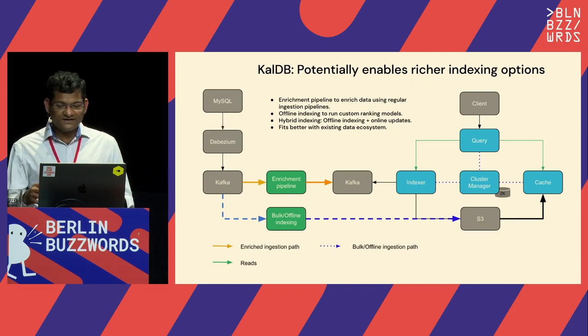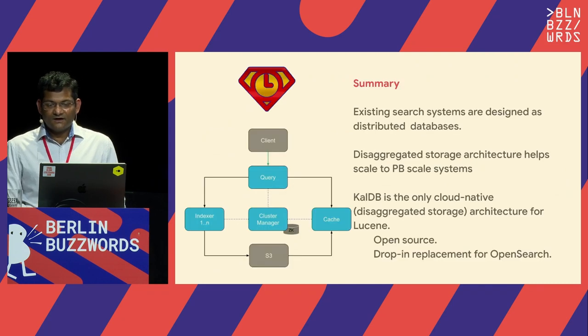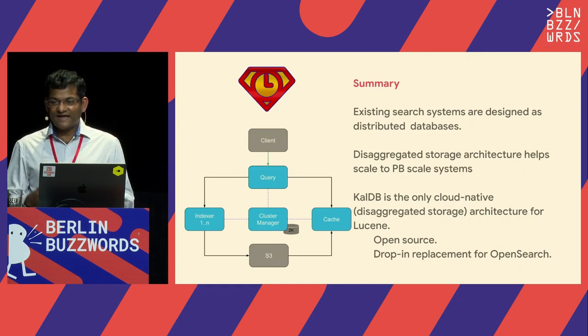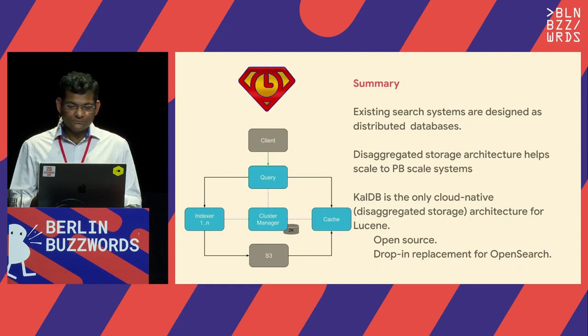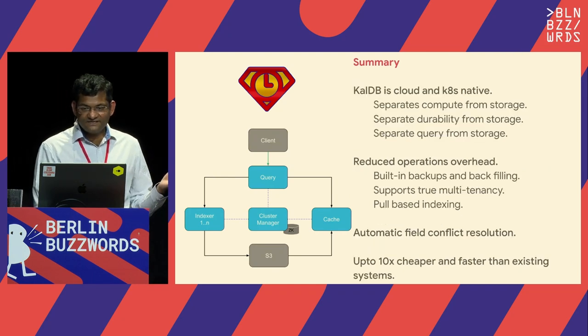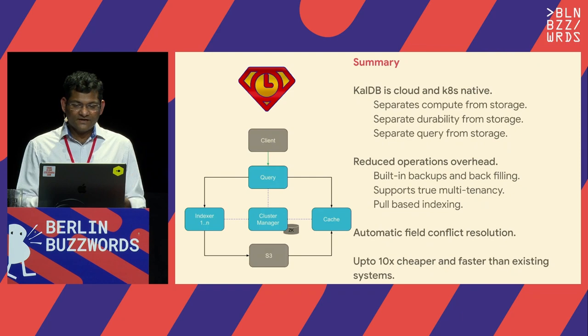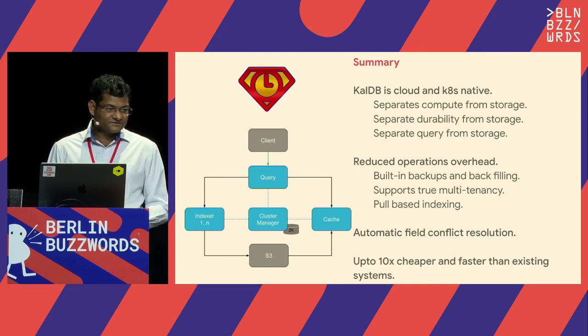In conclusion: existing search systems are designed as distributed databases. Disaggregated storage architecture helps you scale to petabyte-scale systems, and CalDB is a cloud-native architecture for Lucene. It's open source, API-compatible with OpenSearch, and separates storage from compute, durability from storage, and query from storage. It has very low operational overhead with built-in backups, built-in backfilling, and automatic field conflict resolution. In some configurations it can be up to 10 times cheaper than running existing search systems. Thank you — I'm Suman, you can find me on LinkedIn or Twitter. We are looking for design partners and contributions from the community.